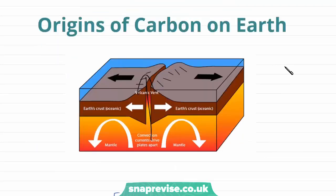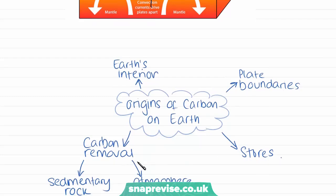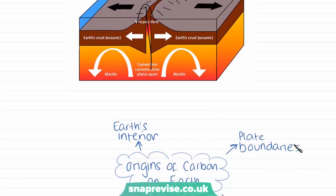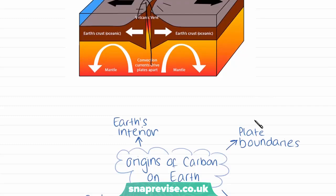So where does this carbon come from? We're now going to look at the origins of carbon on Earth, which come from four different places. The first is the Earth's interior. The Earth has a series of layers: a core, a mantle, and a crust. A lot of carbon originates in the mantle — the semi-molten layer below the crust. This carbon is then transferred into the crust or into the atmosphere at plate boundaries, and it moves up through the crust via volcanic eruptions.